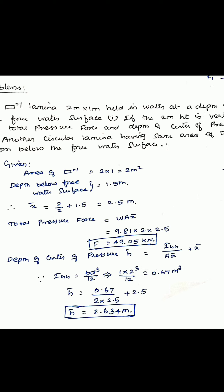The total force comes out to 49.05 kilonewton. For depth of center of pressure, h̄ = I_GG / (A · x̄) + x̄. Using I_GG, the moment of inertia about the centroid — bd³/12 — it comes around 0.67 meter⁴. Now x̄ is equal to 2.634 meter.